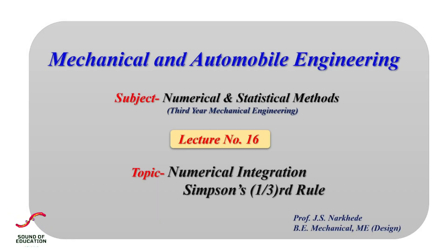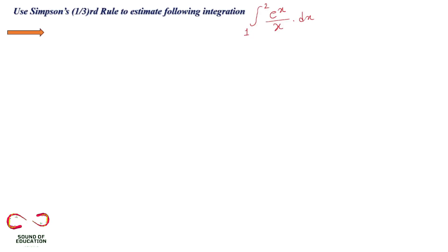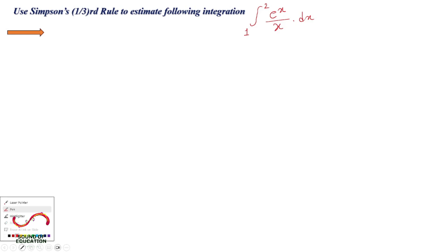Hello all, welcome to the new session. In this session we are going to discuss Simpson's one-third rule. We will discuss the step-by-step procedure to solve integration using Simpson's one-third rule. We have to calculate the area under the curve. The numerical given is: use Simpson's one-third rule to estimate the integration of 1 to 2 of e raised to x divided by x dx.